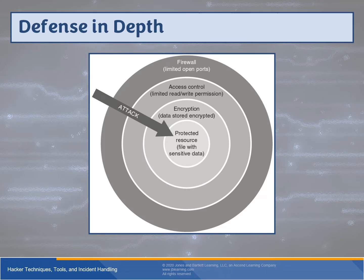Defense in depth is easy to understand. Think of hot potato at a birthday party — you pass the package around and each person pulls off a layer until you reach the prize. In an adversarial context, if an attacker is trying to breach your network, you want to ensure there's always another barrier. More layers don't automatically mean greater security, especially if those layers are poorly implemented. Defense in depth aims to minimize the attack surface of any protected resource.